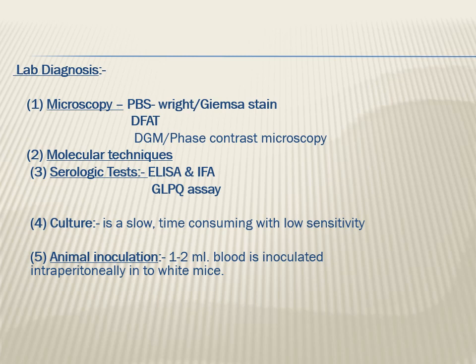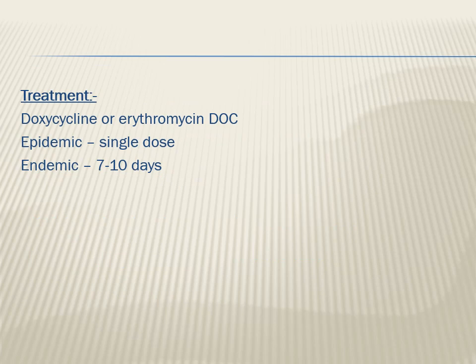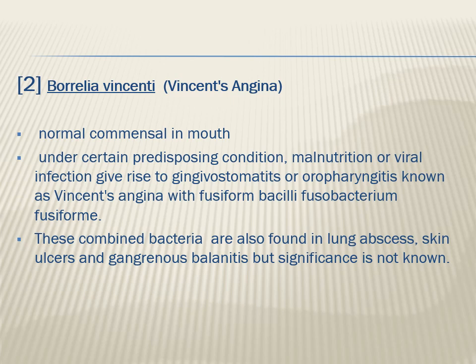For lab diagnosis of Borrelia relapsing fever, microscopy can be performed on a peripheral blood smear, or by direct fluorescent antibody test, dark ground microscopy, or phase contrast microscopy. Molecular methods and serology — including ELISA and immunofluorescent assays — can also be used. Culture is slow and time-consuming, and animal inoculation is another option. Treatment: doxycycline is the drug of choice; alternatively, erythromycin can be used.